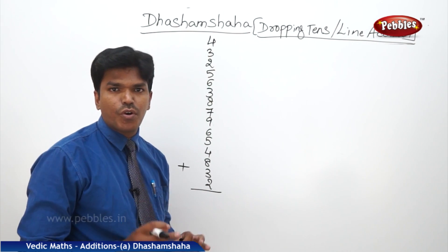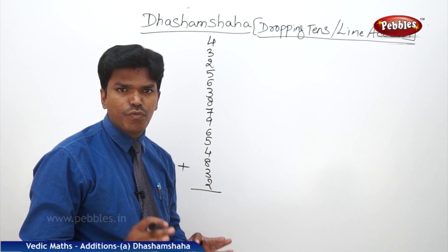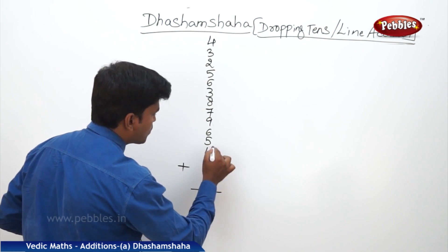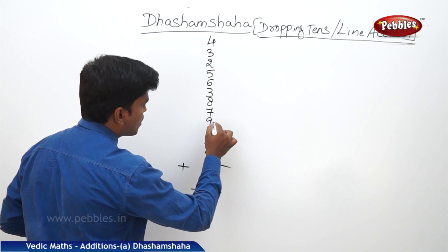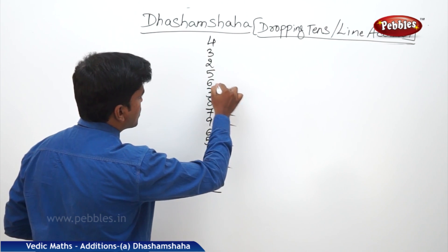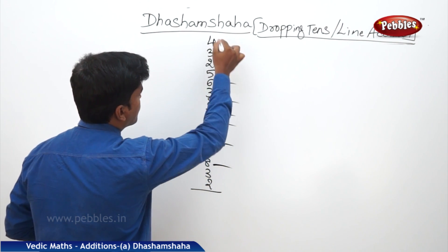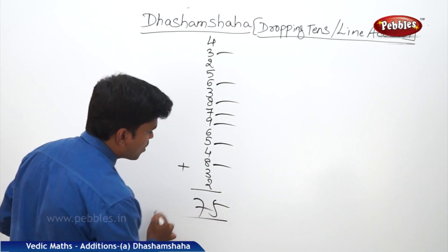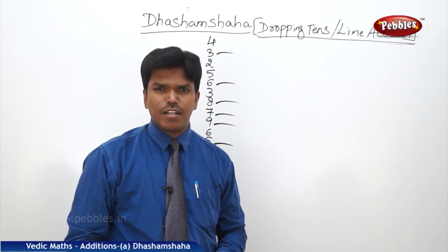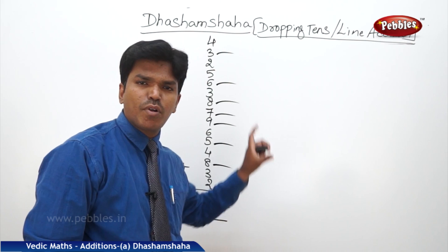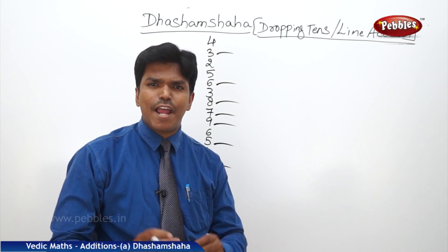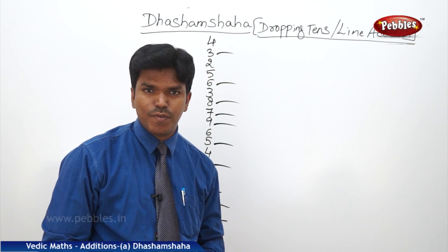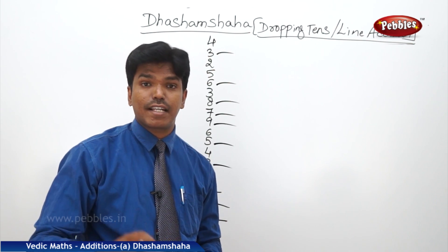Now let us check how much time we are going to take to do this problem. Ready? The answer is 75. This big a problem, we are going to do within less time — maybe within 10 seconds, or even less than 10 seconds.